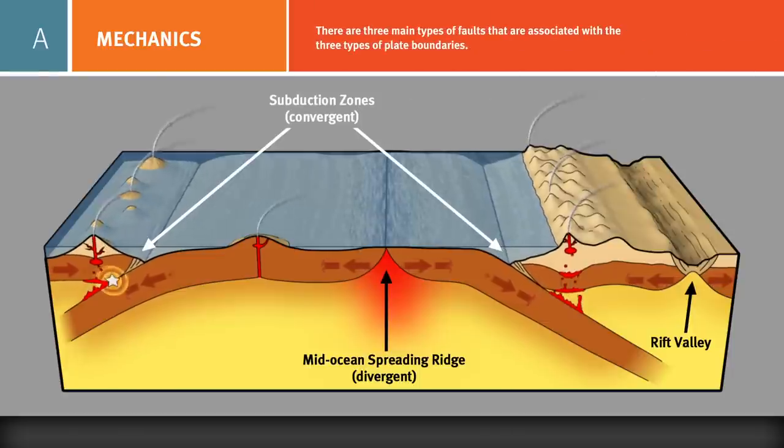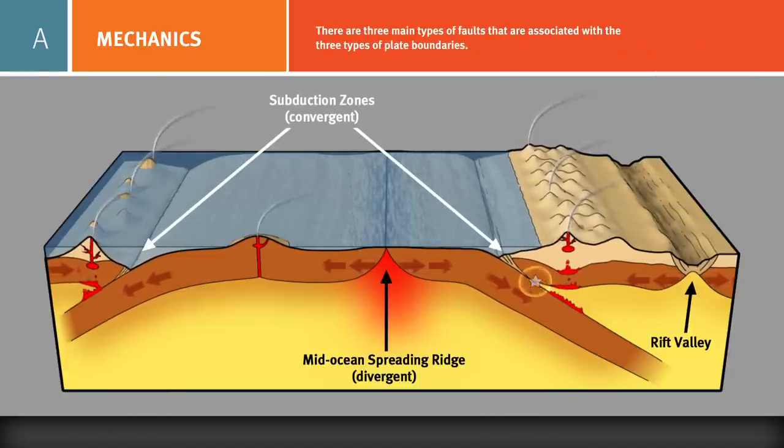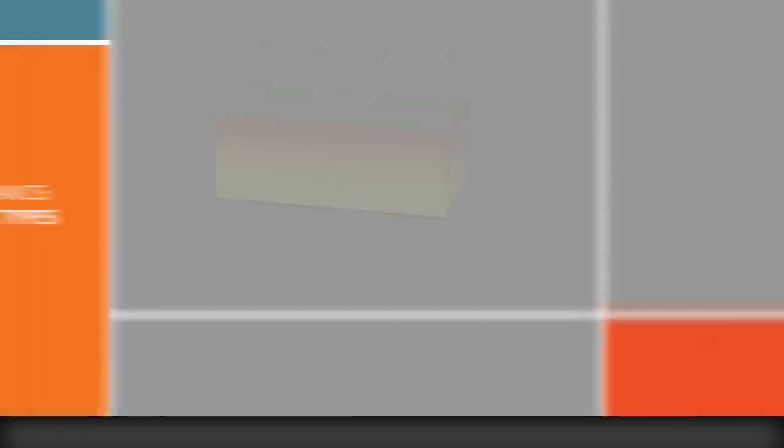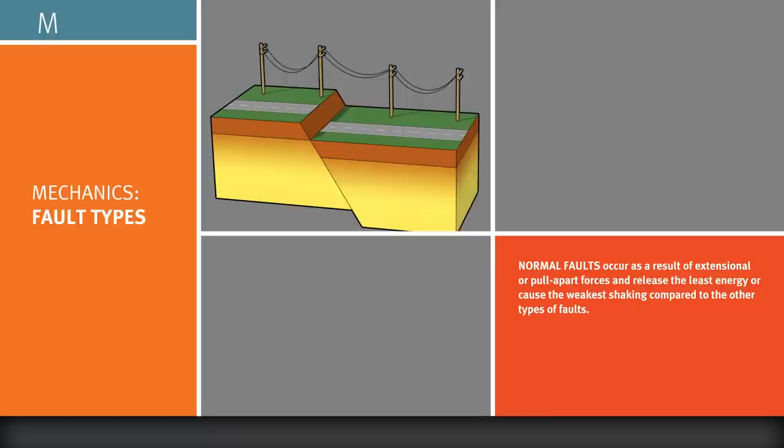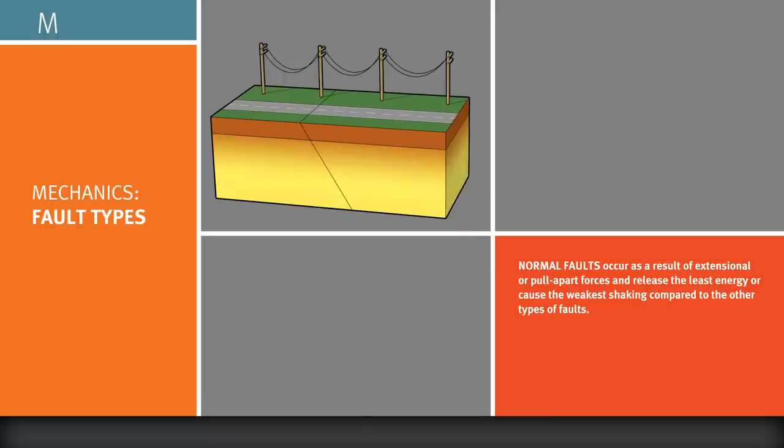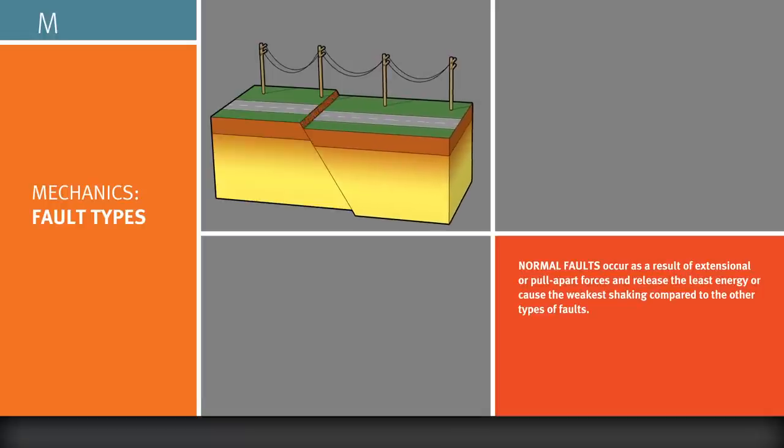There are three main types of faults that are associated with the three types of plate boundaries. Normal faults are generally found in divergent plate boundary zones, where the plates are pulling apart from one another due to extensional forces. They release less energy or cause the weakest shaking of all the fault types.